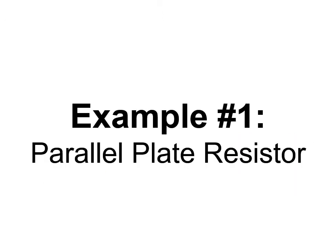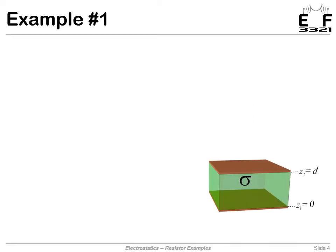First example, the parallel plate resistor. We have some material with some conductivity, and on either side we have conductive plates. The separation between the plates is a distance of d, and we'll place the bottom plate at z equals zero and the top plate at z equals d.